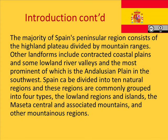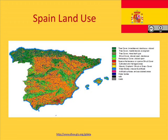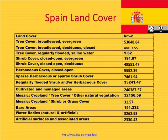These ten natural regions are commonly grouped into four types: the lowland regions, the islands, the Meseta Central and the associated mountains, and other mountainous regions. Spain's land use shows a majority of cultivated and managed areas in the central and southern regions, where sparse shrubland is also located in the lower southern regions. In the northern regions of Spain there is dense tree cover, both broadleafed and needleleafed evergreen.